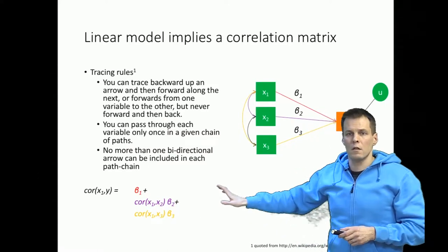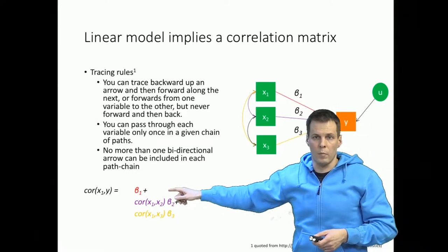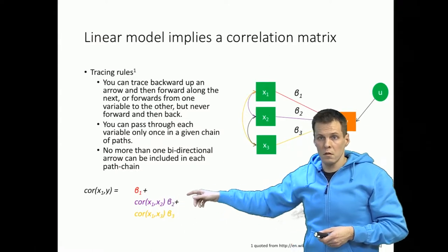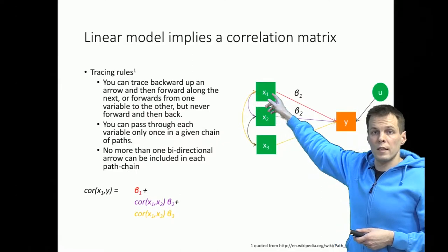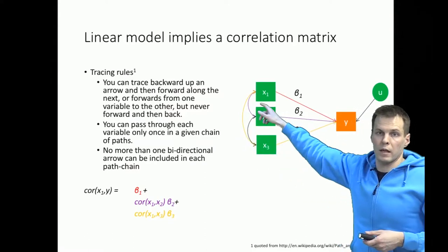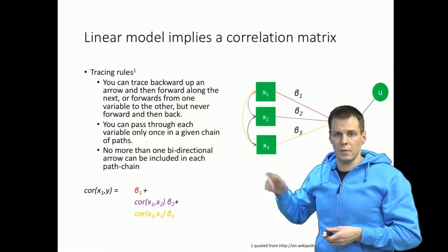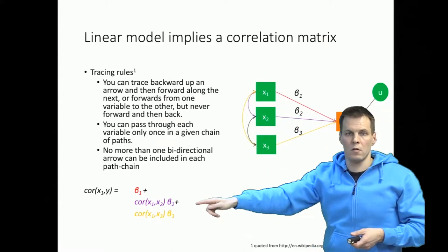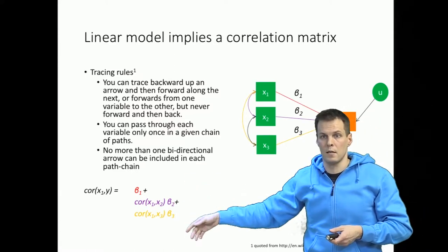So the correlation between x1 and y is the sum of the direct path plus the correlation path times the direct path from x2, plus the correlation with x1 and x3 times the direct path from x3. The interpretation is that the correlation between x and y equals the direct effect plus any spurious effects, because x1 is correlated with x2 and x3 that both have effects on y. We multiply everything along each path and take the sum.